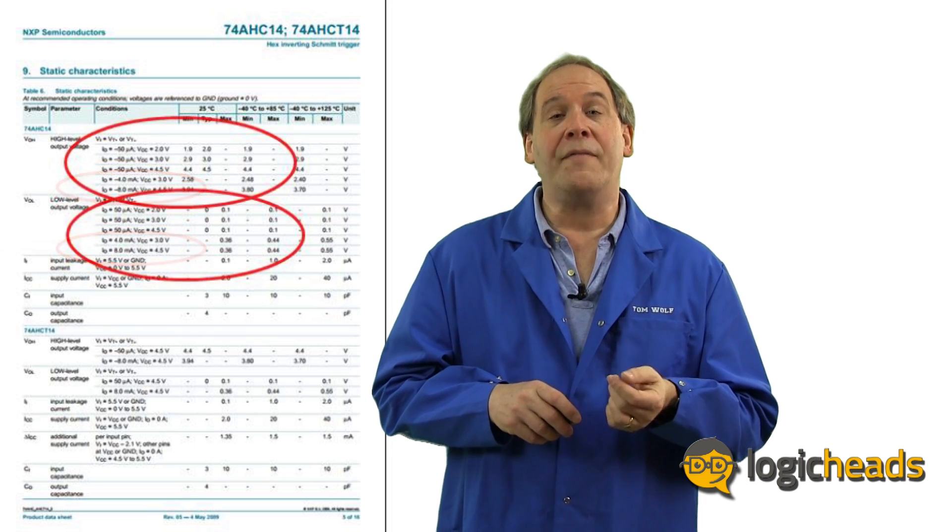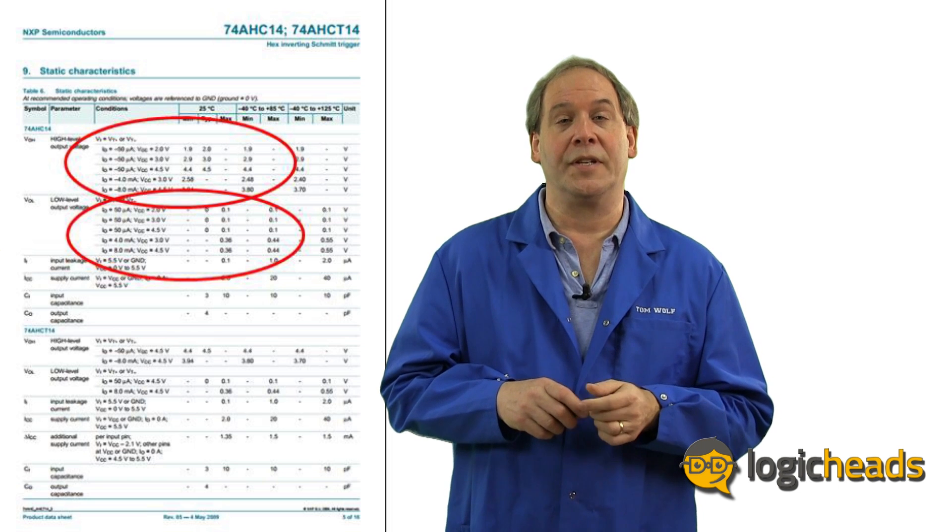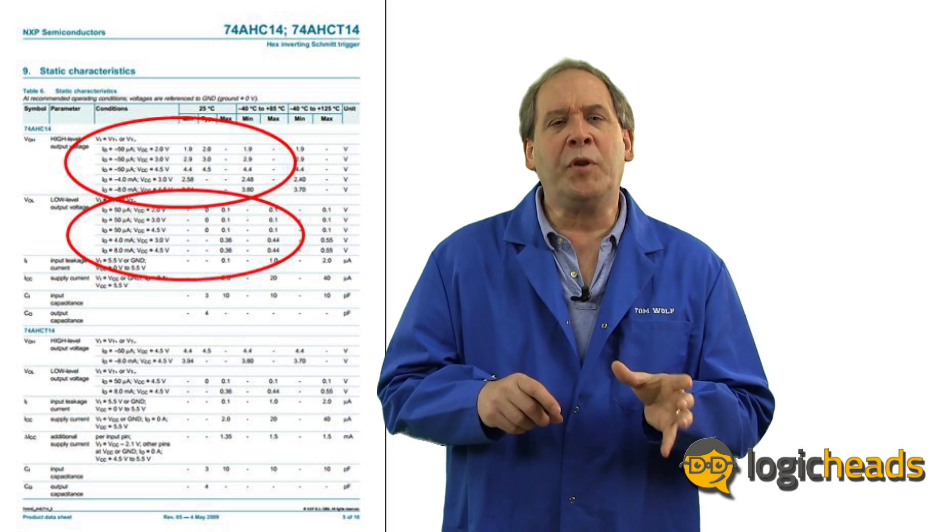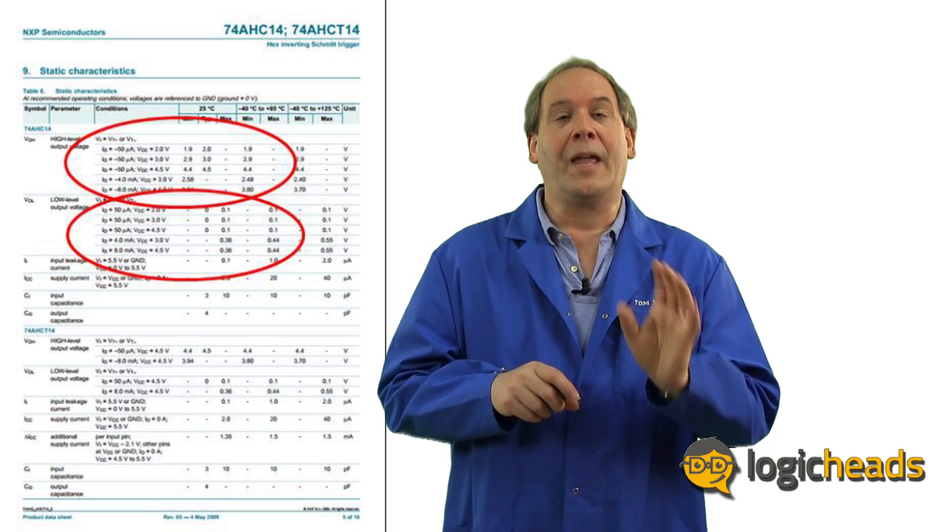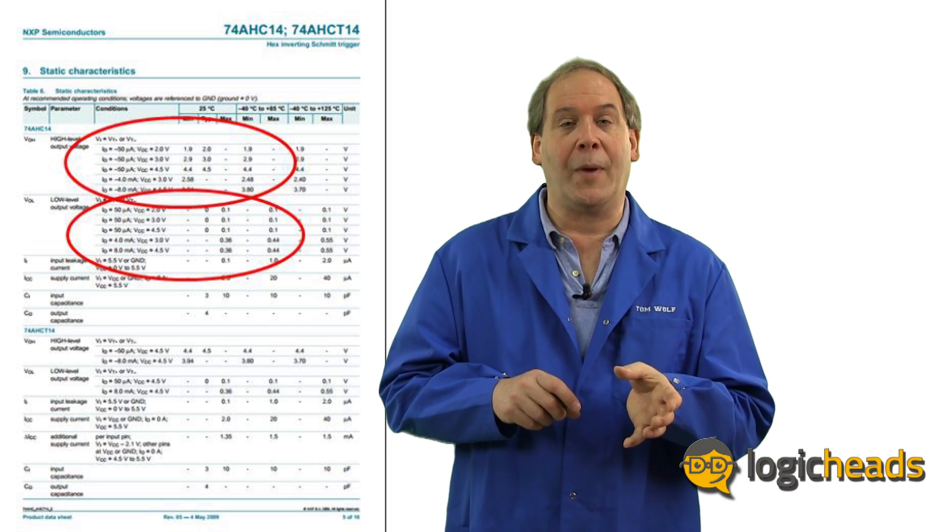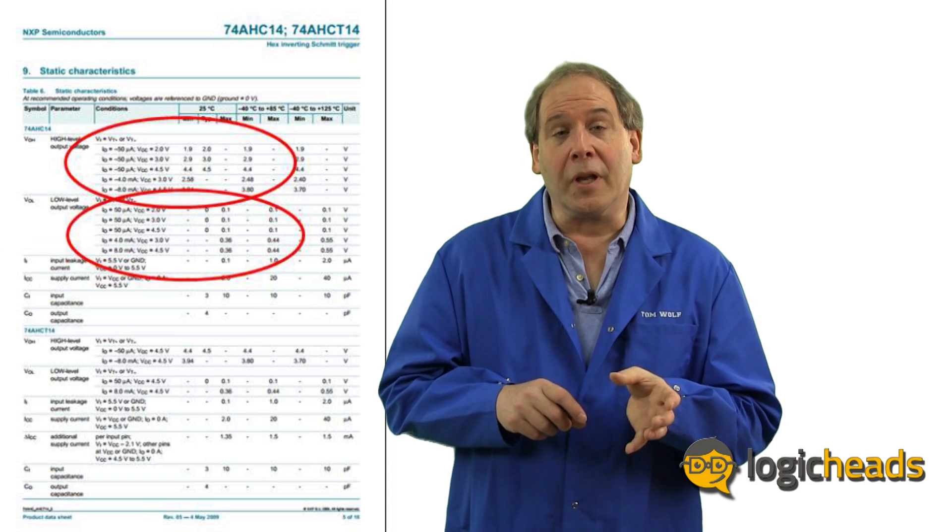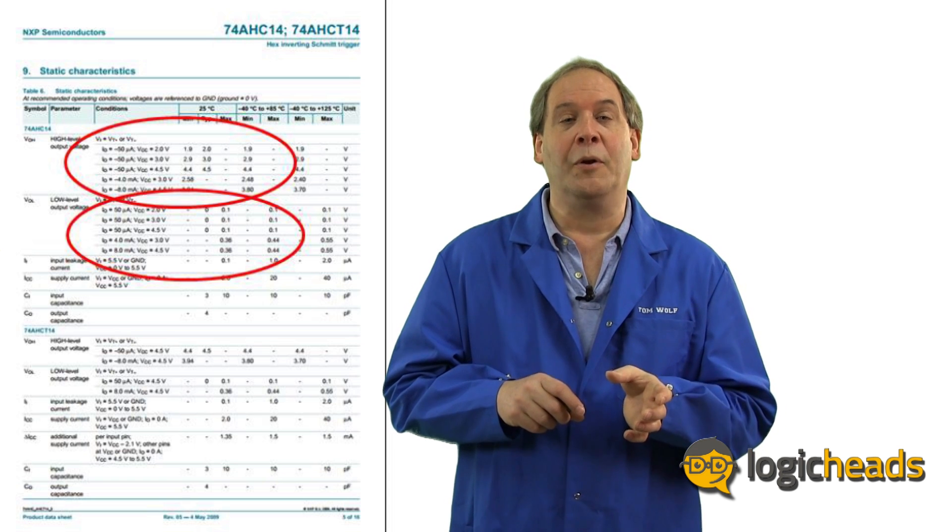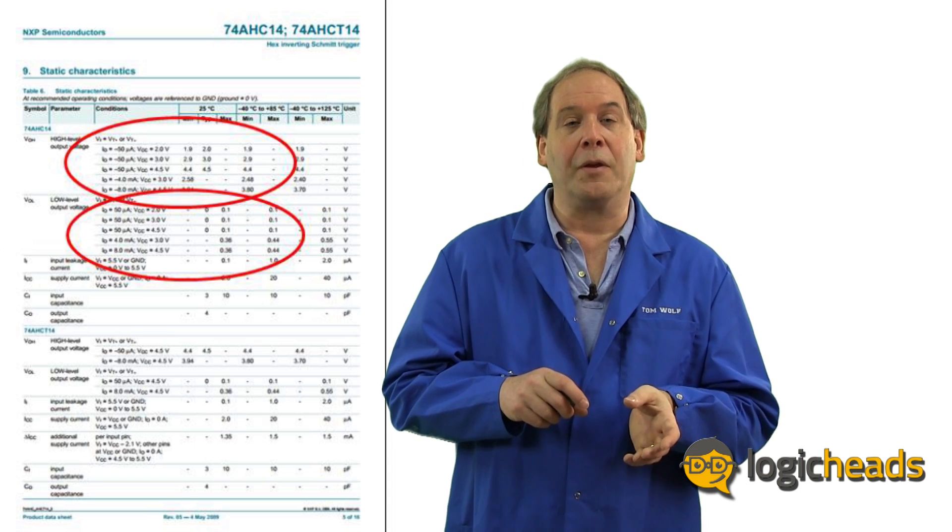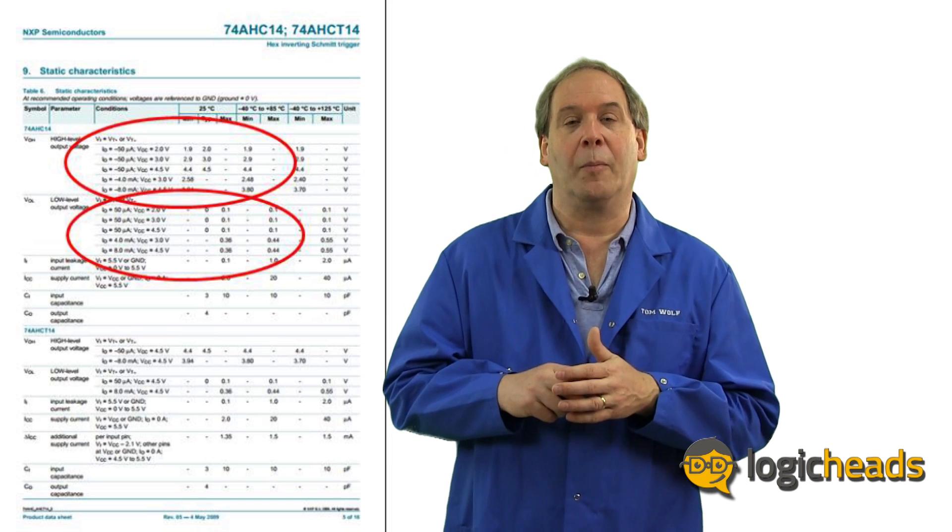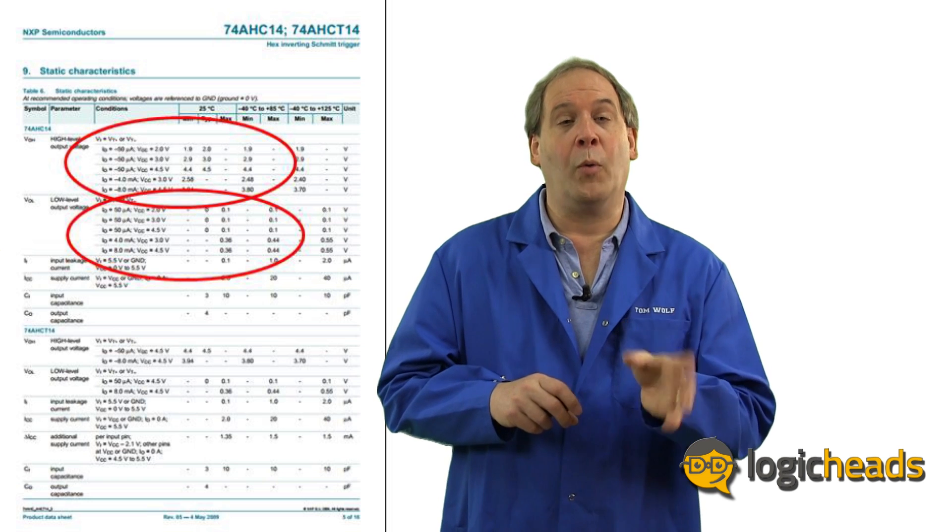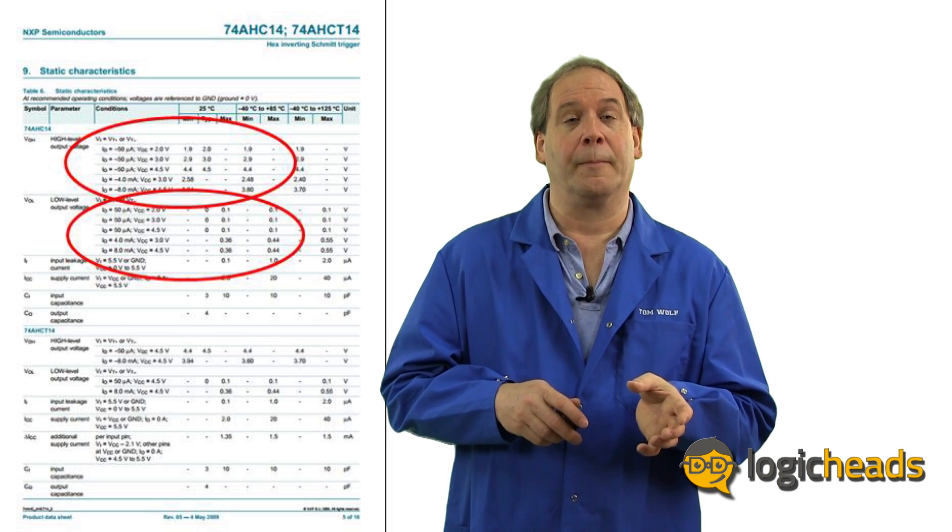Note that there are five different voltage-current combinations listed for this device. But what if you want to know a value which is between there, which is not published? Again, you are working in undocumented space. But fortunately, you can get a fair estimate of the value by graphing the given values and interpolating between points. The relationship is pretty much linear between each set of points. But remember, always use your engineering experience here.